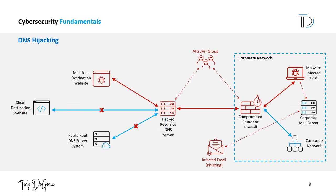And now for the final attack vector, number six: DNS hijacking. DNS hijacking, also known as DNS redirection, is a type of cyber attack that alters the DNS settings on a target system or network, redirecting traffic from a legitimate website to a malicious or compromised website. DNS hijacking can occur in several ways, including via compromised routers, where an attacker can gain access to a router and alter its DNS settings, redirecting traffic to malicious websites.